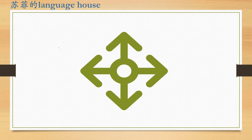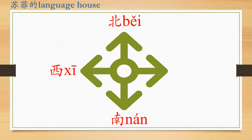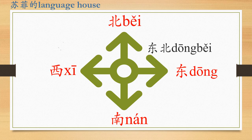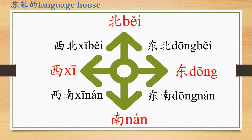Now we have learned all the directions. Let's review them one by one. Bei, the north, nan, the south, xi, the west, dong, the east, dongbei, northeast, dongnan, southeast, xinan, southwest, xibei, northwest.